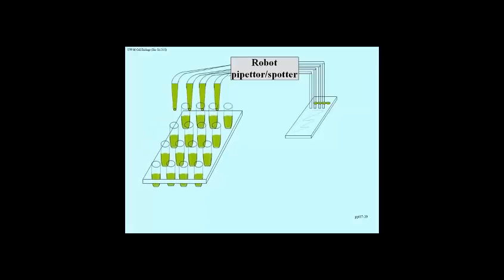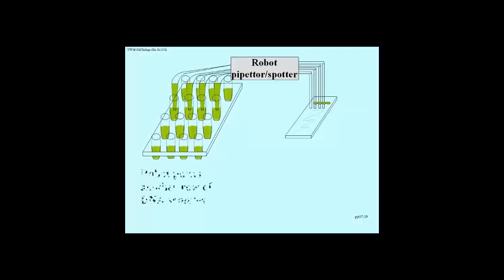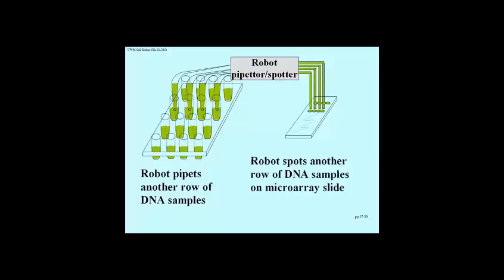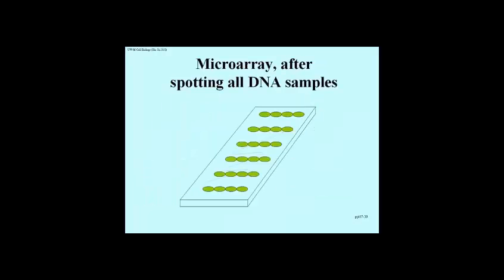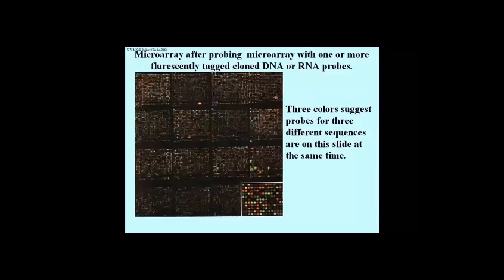In the next step, the robot shifts to the next set of tubes and deposits a set of spots in a row right next to the first row, and this just keeps up. This is a very crude illustration of a very refined process, but it works and the spots are very tiny. Here we have a microscope slide that has been spotted with all the DNA samples you can get on it — many more than what you see here. This is an actual portion, not the whole thing, of a microarray.